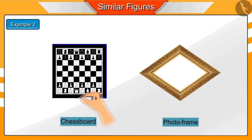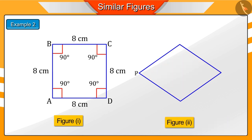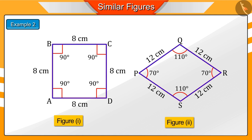He puts them on paper and draws their figure. Suppose we represent the chess board as figure 1, ABCD, and represent the photo frame as figure 2, PQRS. We can see that the number of sides in both figures is the same.